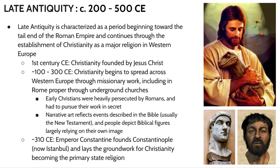In the first century CE, Christianity is founded by Jesus Christ. Starting from around 100 to 300 CE, we see Christianity spreading from its point of origin near Jerusalem across Western Europe through missionary work. Missionaries spread religion outward from a single point of origin. Christianity was also happening in Rome through underground churches, but early Christians were heavily persecuted by the Romans and had to work in secret — for a long period, Christianity was quite literally an underground religion.